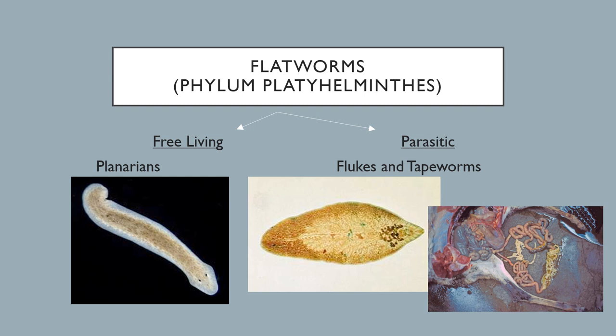Flatworms come in two types: free-living and parasitic. The planaria we've been looking at are free-living — they are not parasites. The second group includes flukes and tapeworms, which everyone is probably familiar with. Flukes are super flat; you'll see those in lab — about two to three centimeters long but very, very flat.